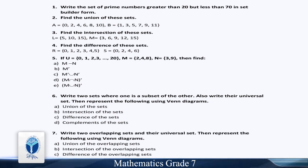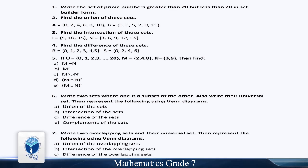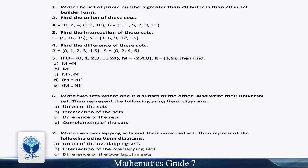Write two overlapping sets and their universal set. Then represent the following using Venn Diagrams: union of the overlapping sets, intersection of the overlapping sets, difference of the overlapping sets, and complement of the overlapping sets.